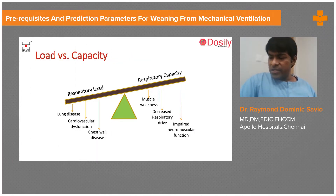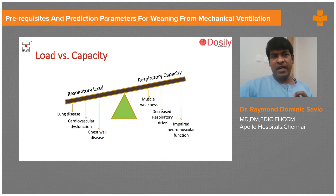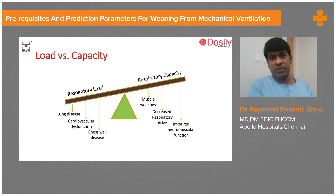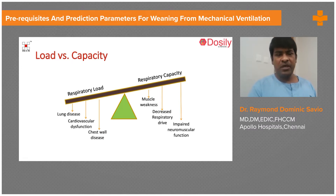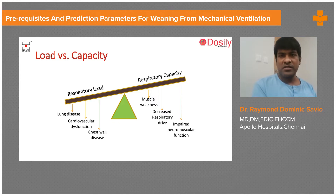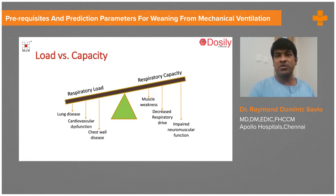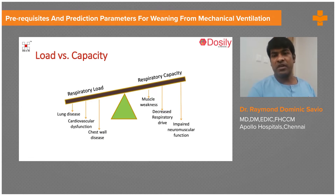When we say liberation process or discontinuation from mechanical ventilation, it is identifying that time point where there is a good balance between the respiratory system workload or demand on one side, and the capacity to meet that demand on the other side. The respiratory system includes not just the lung parenchyma and airway, but also the cardiovascular system, the neuromuscular system, the chest wall dynamics, and how adequately the muscular function can withstand the load.